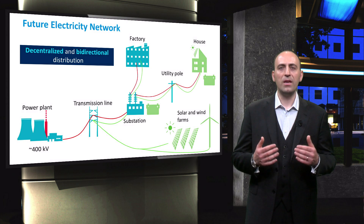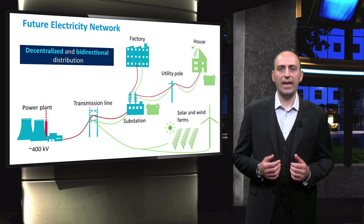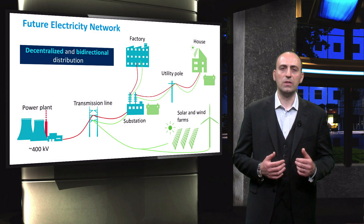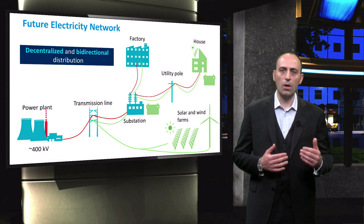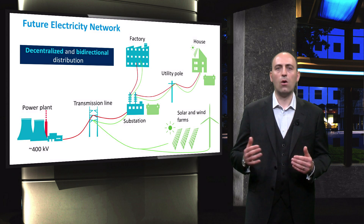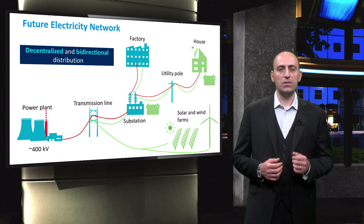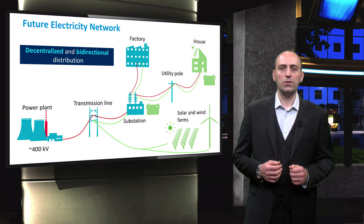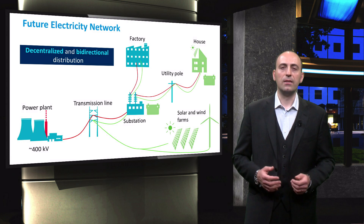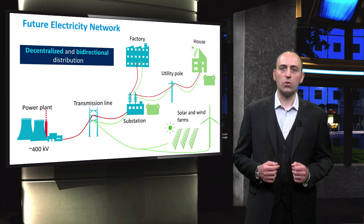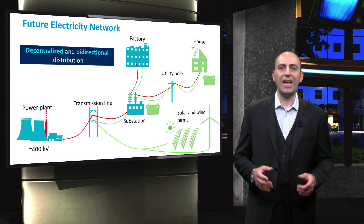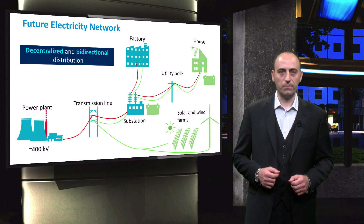On a very large voltage scale, we can also have a bidirectional distribution with solar power plants or wind farms. It is therefore important to realize that renewable sources enable the production of power exactly where it is needed.